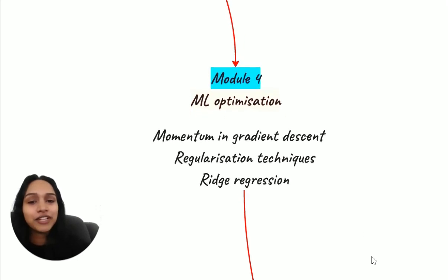The fourth module will be for ML optimization, covering the depths of ML optimization. We will understand momentum in gradient descent, different regularization techniques, and ridge regression.